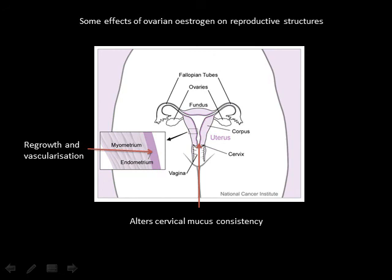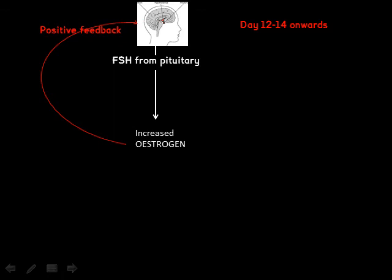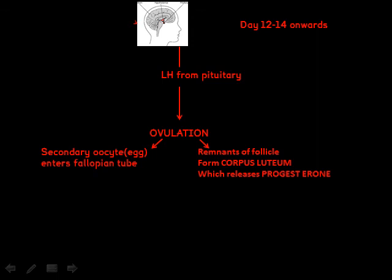But then, around day 12 to 14, something remarkable happens. The negative feedback effect of oestrogen abruptly switches to positive feedback, and this triggers the release of LH, or luteinising hormone, by the pituitary. LH causes the follicle to rupture during ovulation, releasing the egg or oocyte.